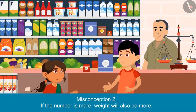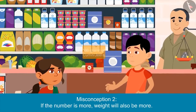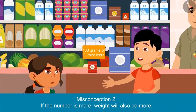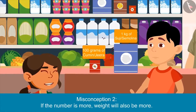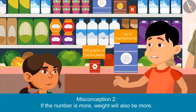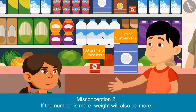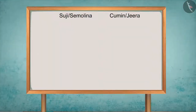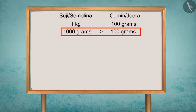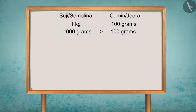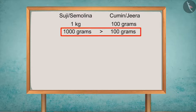You had just picked a packet of 100 grams of jeera and I picked a packet of 1 kg of sooji. Which of these two packets was heavier? Your packet of sooji — because the packet of sooji is 1 kg, and 1 kg is equal to 1000 grams. So 1000 grams of sooji is heavier than 100 grams of jeera.